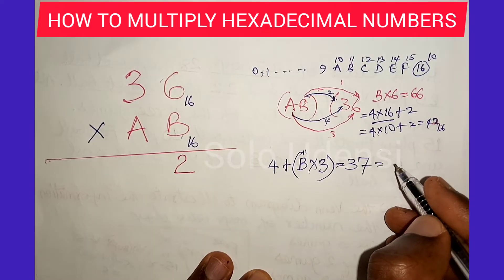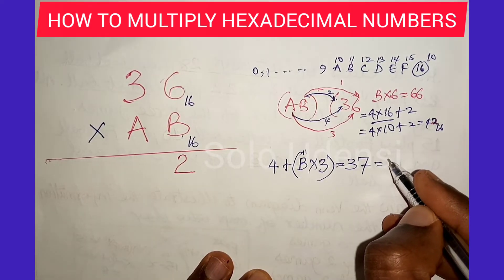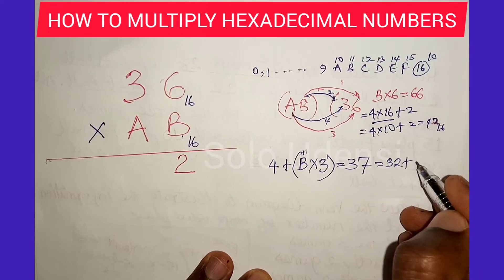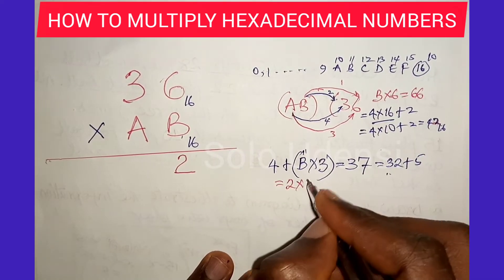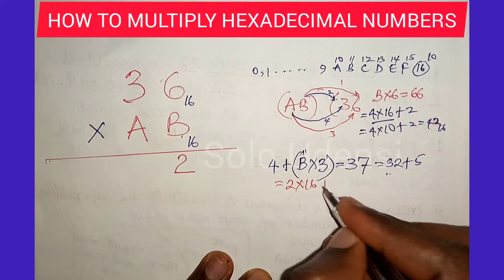They equal 32 plus 5, which equals 2 times 16 plus 5.